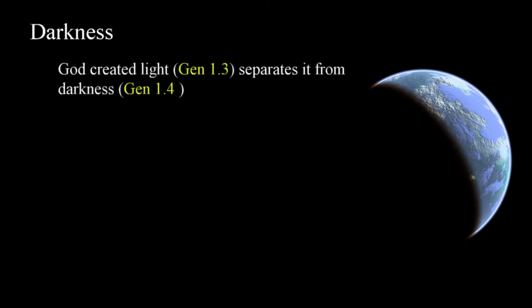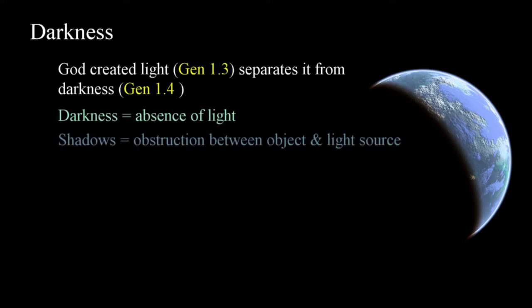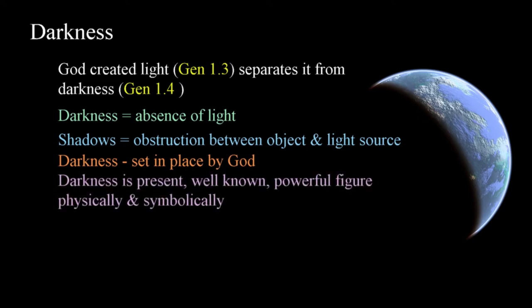This seems to be a simplistic statement, but we have to consider what's taking place. God creates light, but there's no sun at this time, and there won't be until the fourth day of creation. The statement regarding darkness treats it as if it has physical properties — it's separated or divided from light, which implies form to some degree. In the modern world, we recognize that darkness is the absence of light. Shadows are created by objects interrupting transmission of light from a radiant source. But in Genesis chapter 1, there's no radiant source named. We see that darkness is set in place by God, who understands and is able to manipulate its nature. From that point on in the biblical narrative, darkness is present, well known, and at times a powerful figure symbolically and physically.